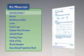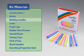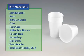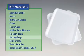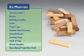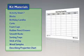You will need the following materials from the kit: Activity Sheet 7, blocks, birthday candles, corks, foam cups, rubber pencil erasers, smooth rocks, sorting trays, stick of clay, wood samples, and the Describing Properties Chart.